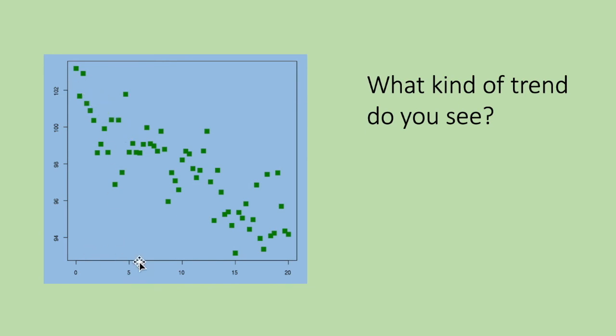As this axis is increasing, this axis is decreasing. So I can see some sort of negative trend here. There is a downward trend, and therefore there is a negative correlation.